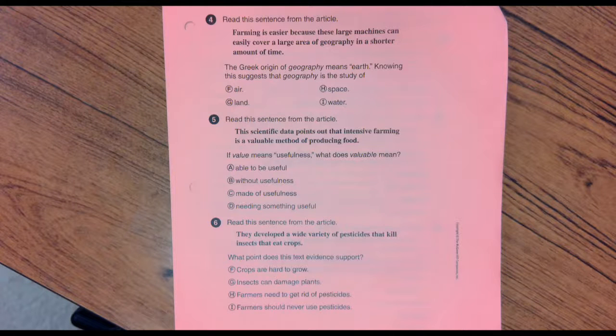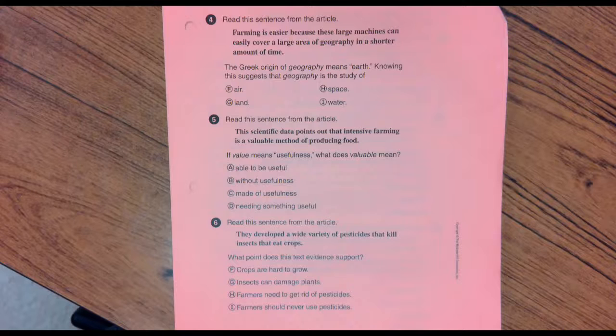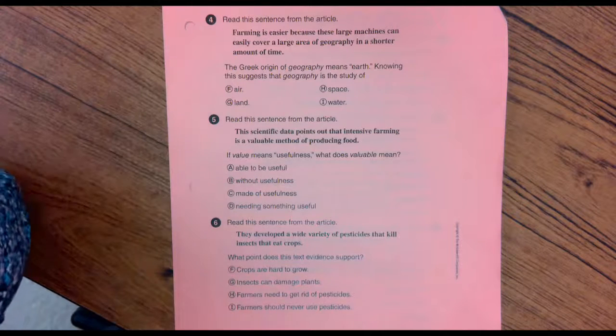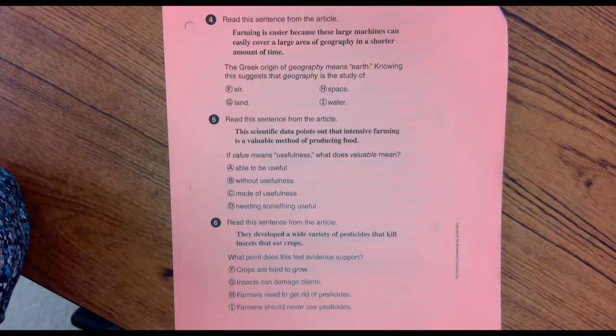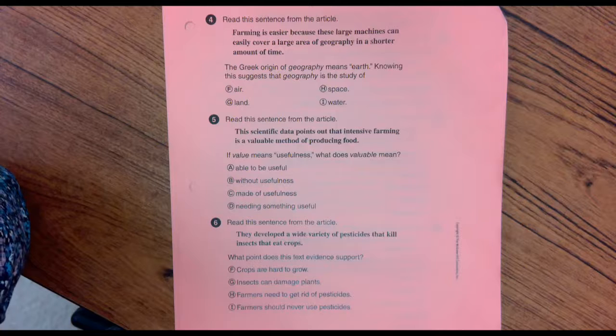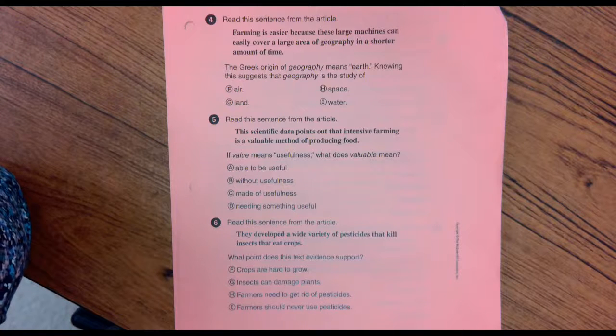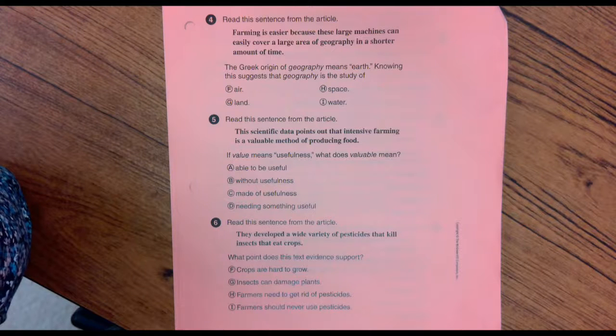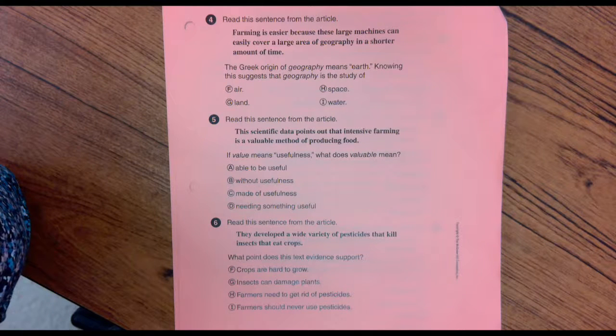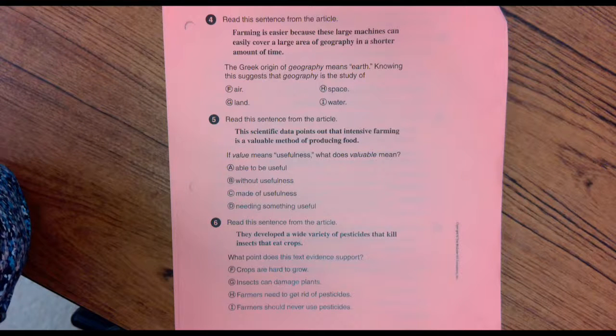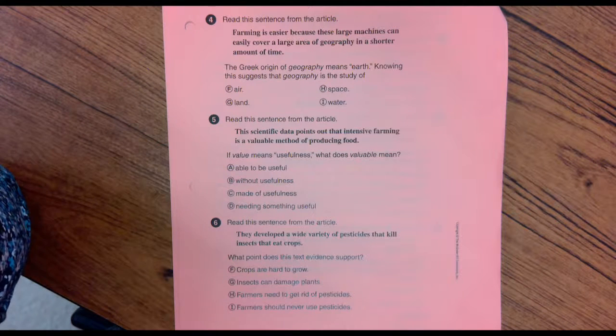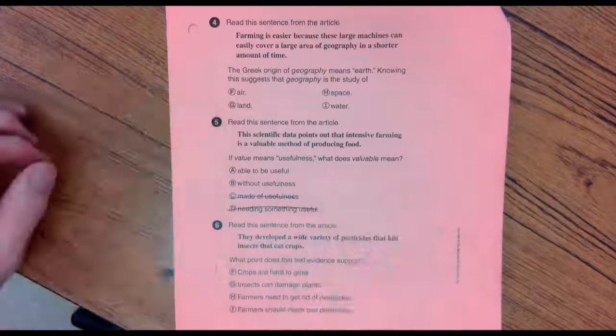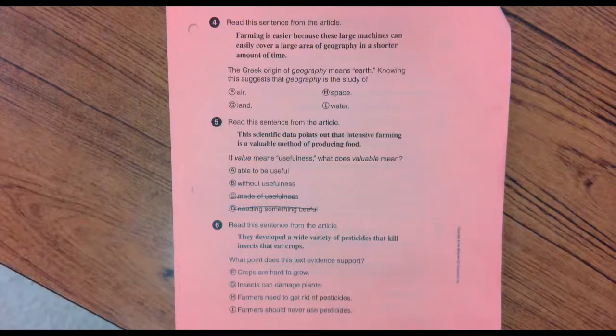Number five. Read this sentence from the article. Remember, this scientific data points out that intense farming is a valuable method of producing food. If value means usefulness, what does valuable mean? Remember, able is one of our Greek suffixes. Able to be useful, without usefulness, made of usefulness, needing something useful. A or B.